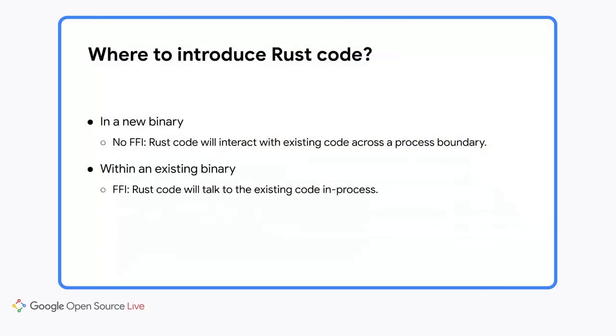Now let's discuss technical aspects in detail. When you start adding Rust code to the project, you will need to decide how it will fit into the architecture of the application. You have an important choice: whether Rust code will live in a new binary, or whether you will add Rust to an existing binary written in a different language. This choice will determine how your new Rust code will interact with the rest of the project. In the case of a new binary, it will be a cross-process interaction and you will not have to worry about FFI. If you choose to add Rust to an existing binary, you will need to call Rust from another language or vice versa.